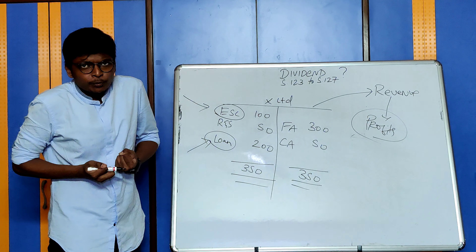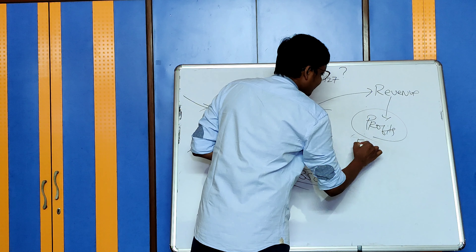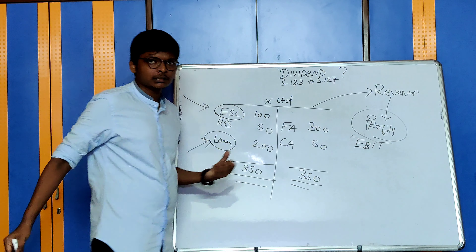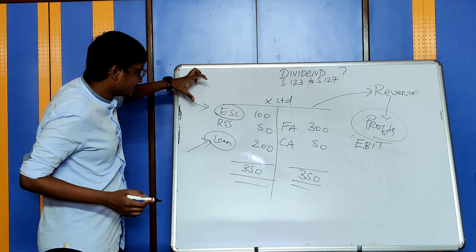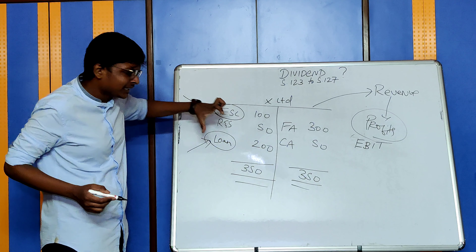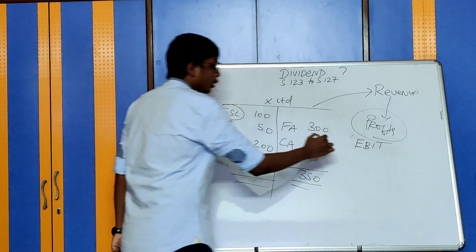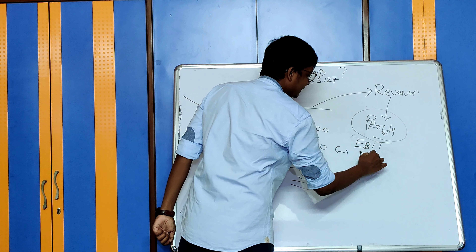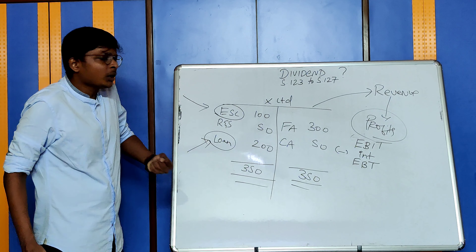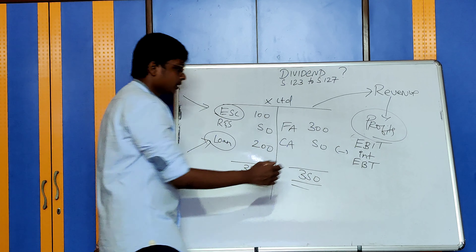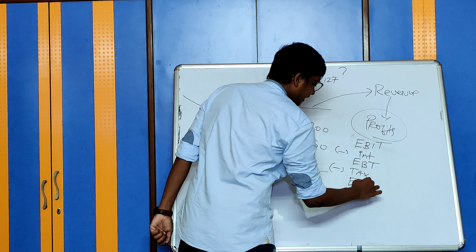Who takes a share of these profits? The minute profit is earned — or in other words, earnings before interest and tax — first, you have to pay interest on the loan, because somebody is lending money here. You have to give them an interest return. Once you pay interest, you will have earnings before tax. Next, you have to pay tax to the government. After paying the taxes, you will have something called earnings after tax.